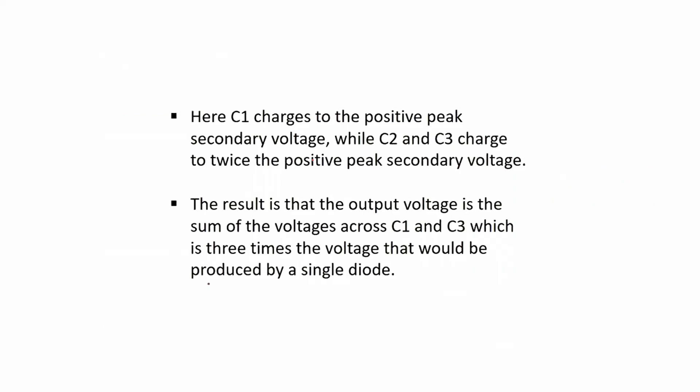In summary, C1 charges to the positive peak secondary voltage Vm, while C2 and C3 each charge to twice the positive peak secondary voltage, 2×Vm. The output voltage is the sum of voltages across the upper capacitors C1 and C3, which is Vm + 2Vm = 3Vm — three times the voltage that would be produced by a single diode rectifier. This concludes the explanation of the voltage doubler and voltage tripler circuits.